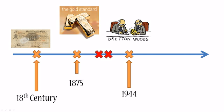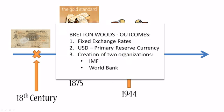Let's have a look in a bit more detail at the outcomes of the Bretton Woods Agreement. First, fixed exchange rates — all currencies were pegged to the US dollar. Second, the US dollar became the primary reserve currency, which meant that it had to be backed by gold.